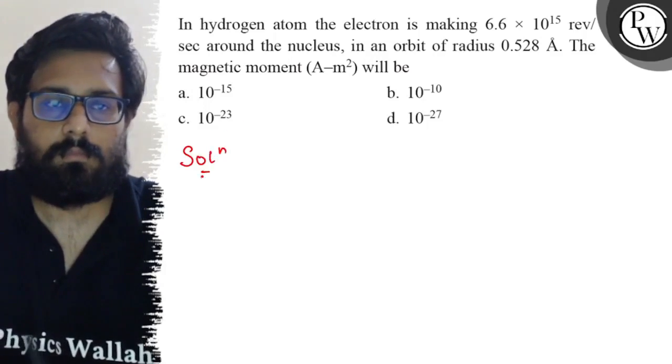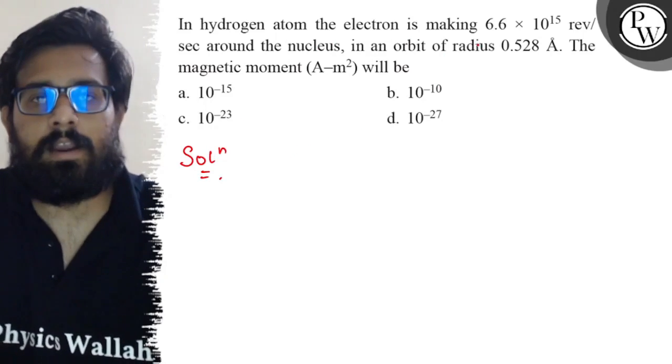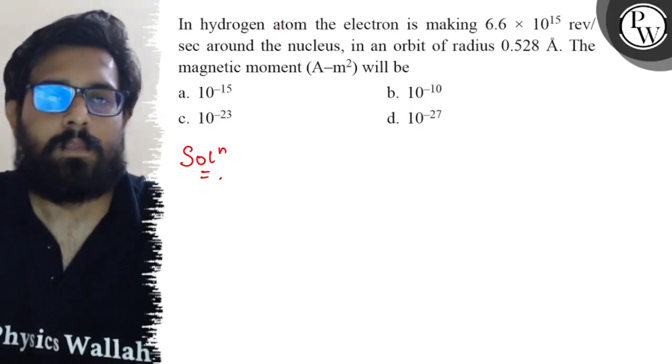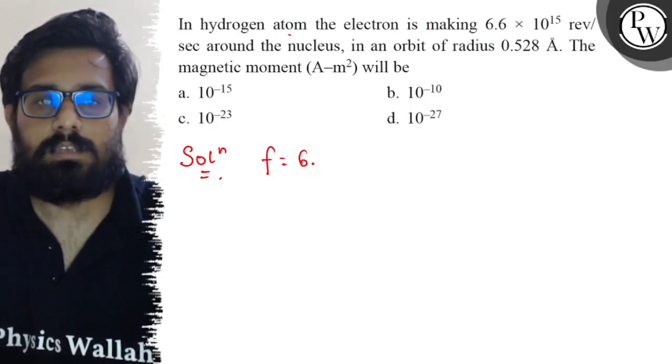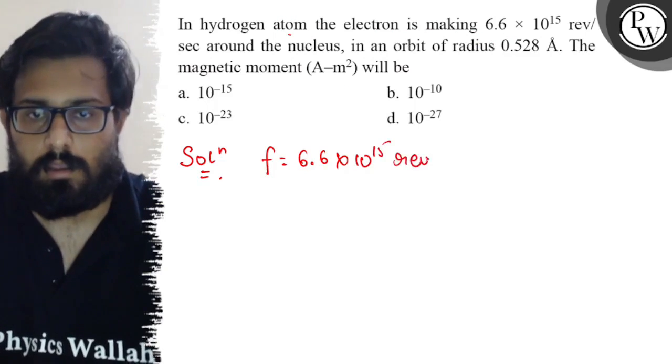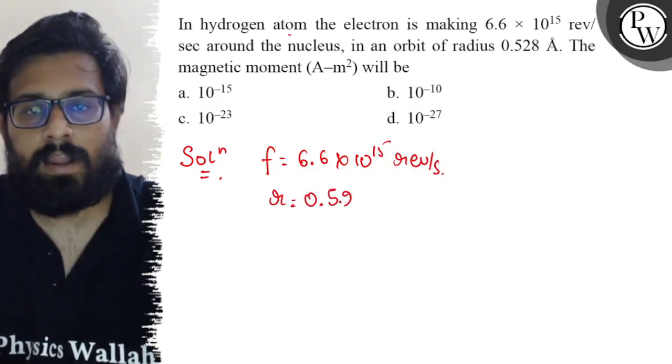Here in this question we have the electron revolving in a hydrogen atom. The frequency is given as 6.6 × 10^15 revolutions per second and the radius is given as 0.528 angstrom.